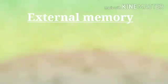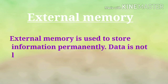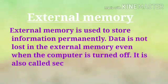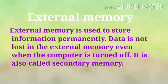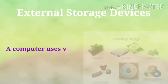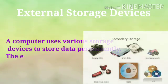Now, what is external memory? External memory is used to store information permanently. Data is not lost in external memory even when the computer is turned off. It is also called secondary memory. If we want to store our things permanently, we use external memory or secondary memory. We have many devices to store our data permanently — they are called external storage devices. A computer uses various storage devices to store our data permanently.